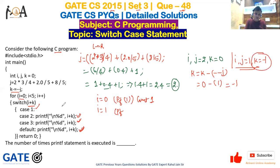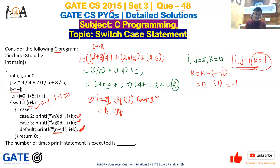For i + k = 0 (i.e., switch value 0), case 0 has no printf. But falling through, the default statement runs. So one more printf executes. Count becomes 2. The value i is then incremented to 2.